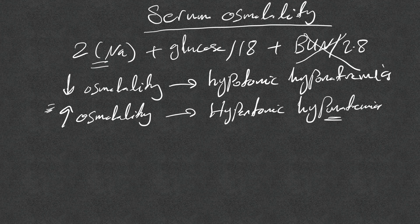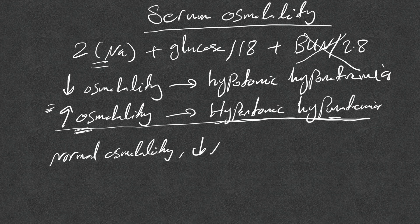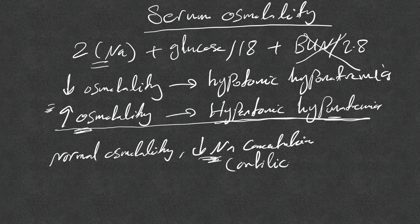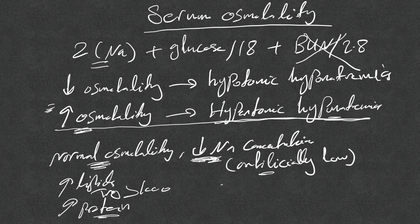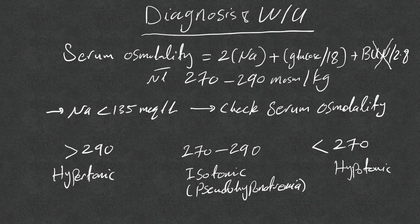Where you see normal osmolality but low sodium concentration on bloodwork, this is simply an artificially low sodium — not true hyponatremia. This is pseudohyponatremia, caused by old lab techniques. It used to occur with triglycerides above 1000 or high proteins as in multiple myeloma. With modern lab techniques, you will likely never see it anymore. If you see normal osmolality with low sodium, call it pseudohyponatremia and move on.